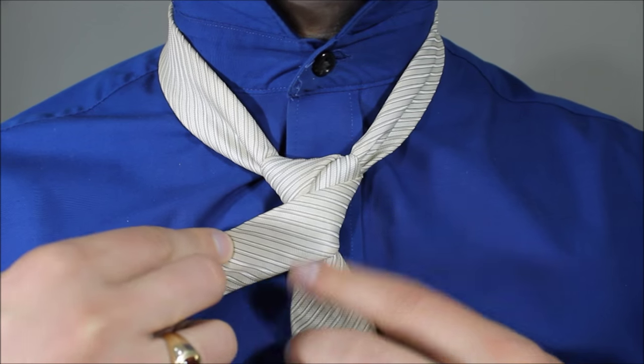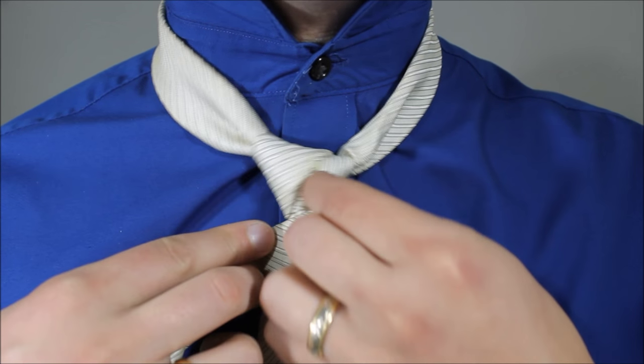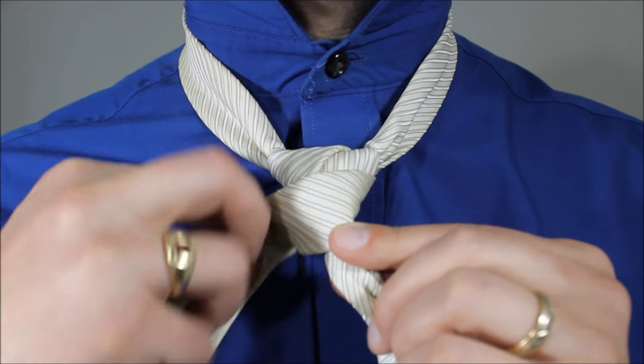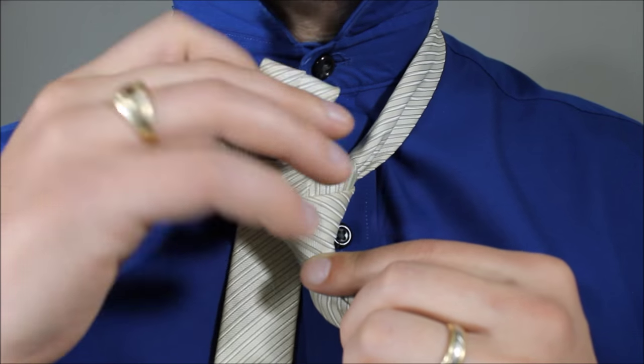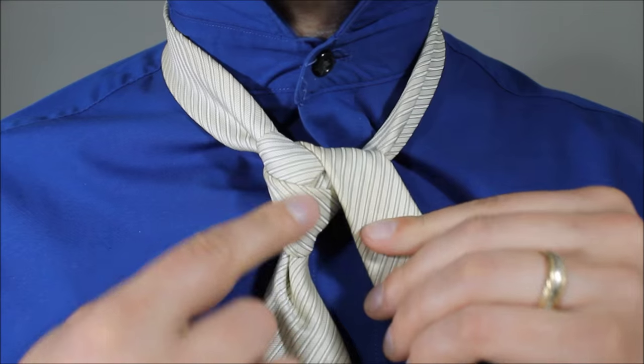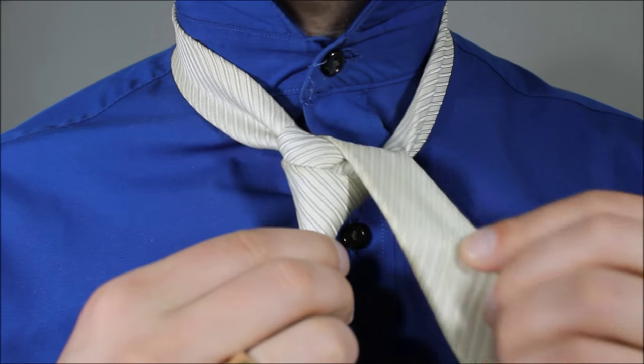And now we're going to cross the front. So this starts to form our first triangle in sort of this looping idea. Alright, and now taking the little end up through the neck hole and across. So you want to avoid covering up your little triangle that you're making here.